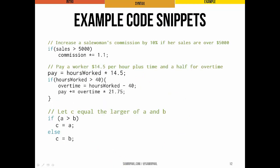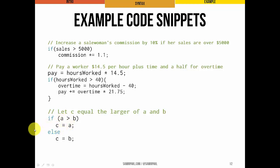Here are some example code snippets. First, we increase a saleswoman's commission by 10% if her sales are over $5,000 — no curly braces, but there's only one statement so there's no confusion. Second, we pay a worker $14.50 per hour plus time and a half for overtime: normal pay is hours worked times $14.50, and if hours worked is greater than 40, we calculate and add the overtime pay. Third, we assign the larger of two variables, a and b, to a third variable c: if a is greater than b, c equals a; otherwise c gets b.